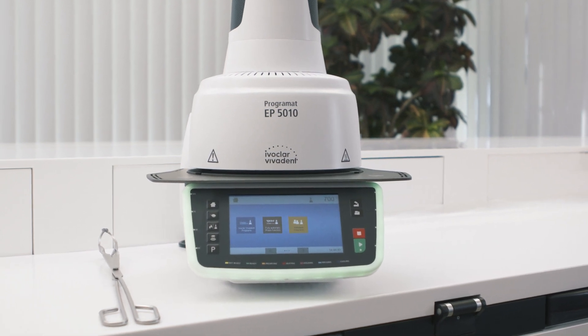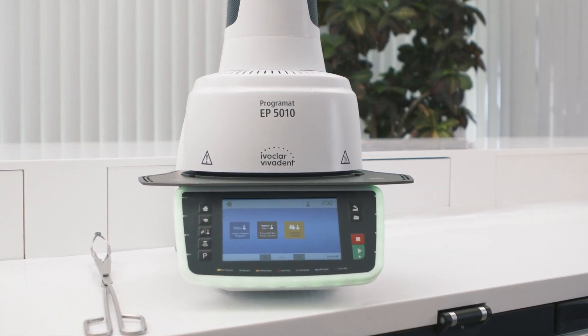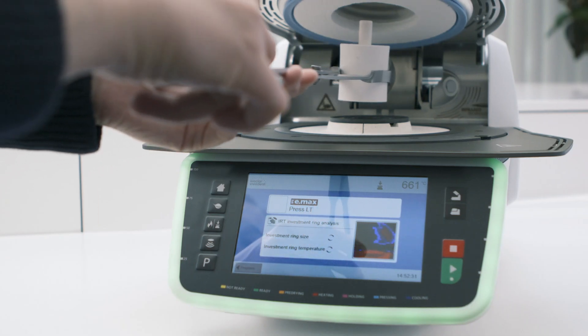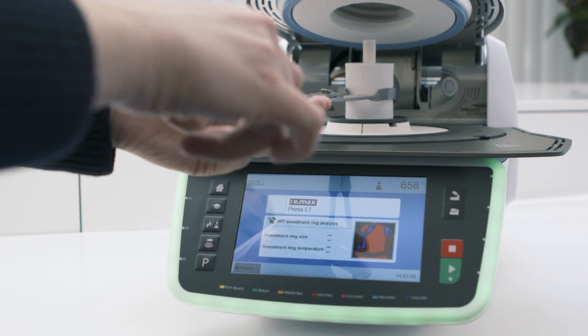If you don't want to use the FPF function, you have the option to run a conventional press process. The IRT technology comes in handy here too.